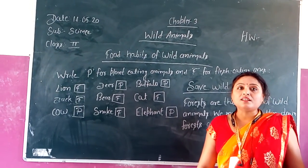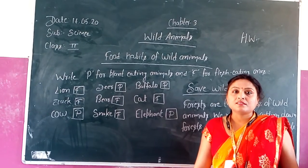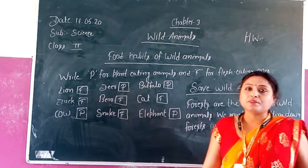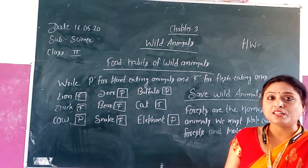Some animals eat both plants and other animals. They are called omnivores. For example, deer, crow, and demon.